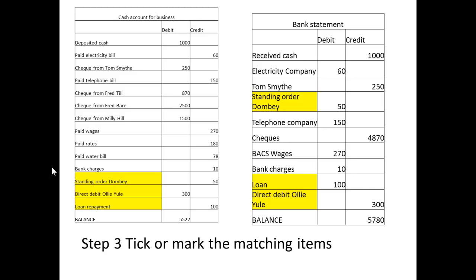Those entries have been recorded in the cash account. We should now have all the items from the bank statement entered to the cash account for the business. The next step is to tick or mark the matching items — I've shaded all the matching items. Everything matches except for two items on the cash account for the business: both are payments made — payment for rates and payment for a water bill, for £180 and £78 respectively.